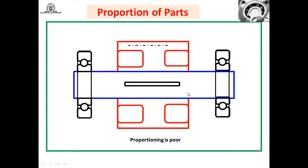Consider proportion of parts. For example, a shaft with two bearings supporting it and one gear mounted on it — if the width and dimensions of the gear are not proper, that is improper proportion. The gear size and shaft size proportion is poor in this case. While constructing machinery and mounting parts, we must take care of this proportion. Sometimes the shaft diameter may be very small while the PCD of the gear is large — that is not proper proportion.